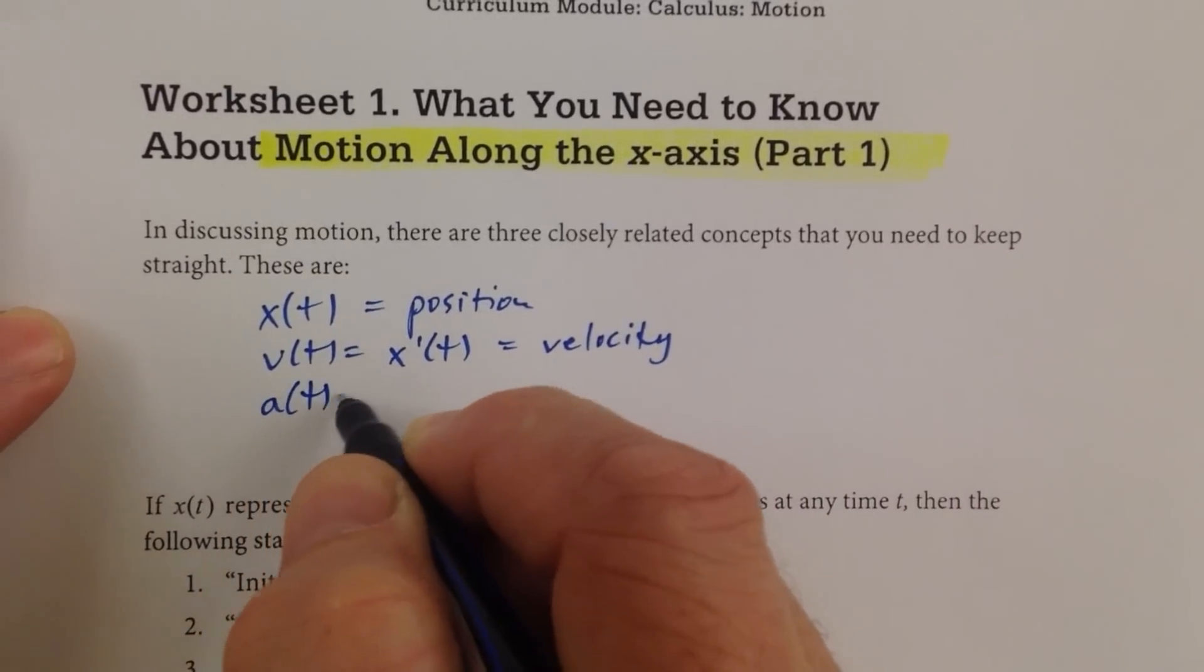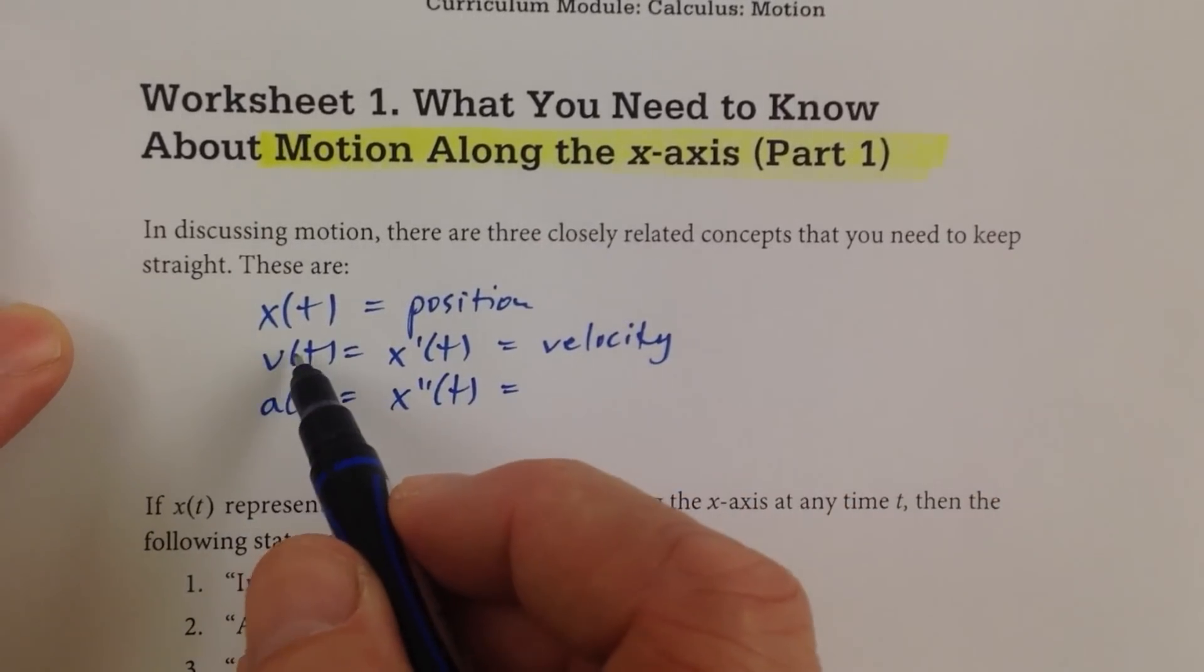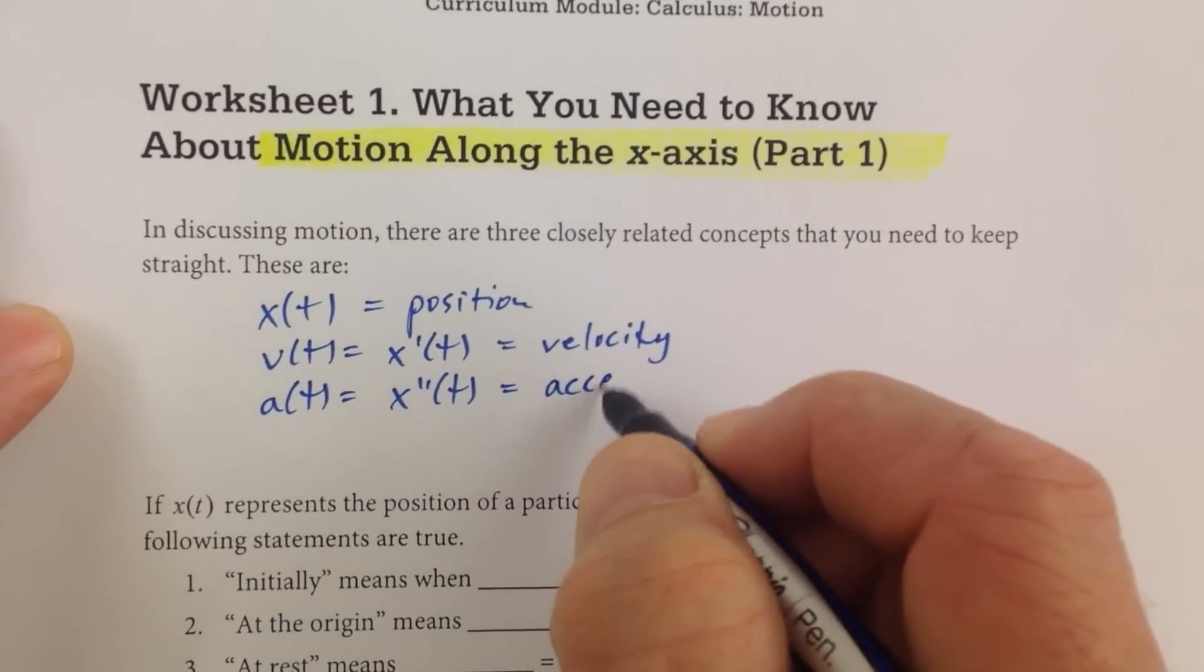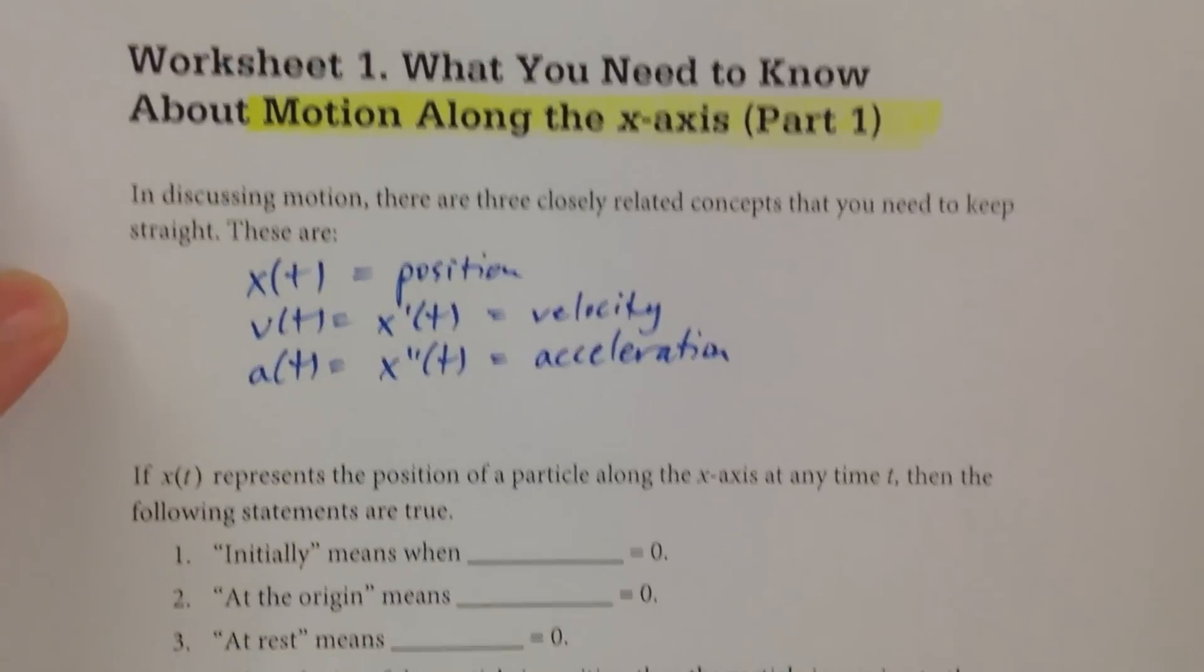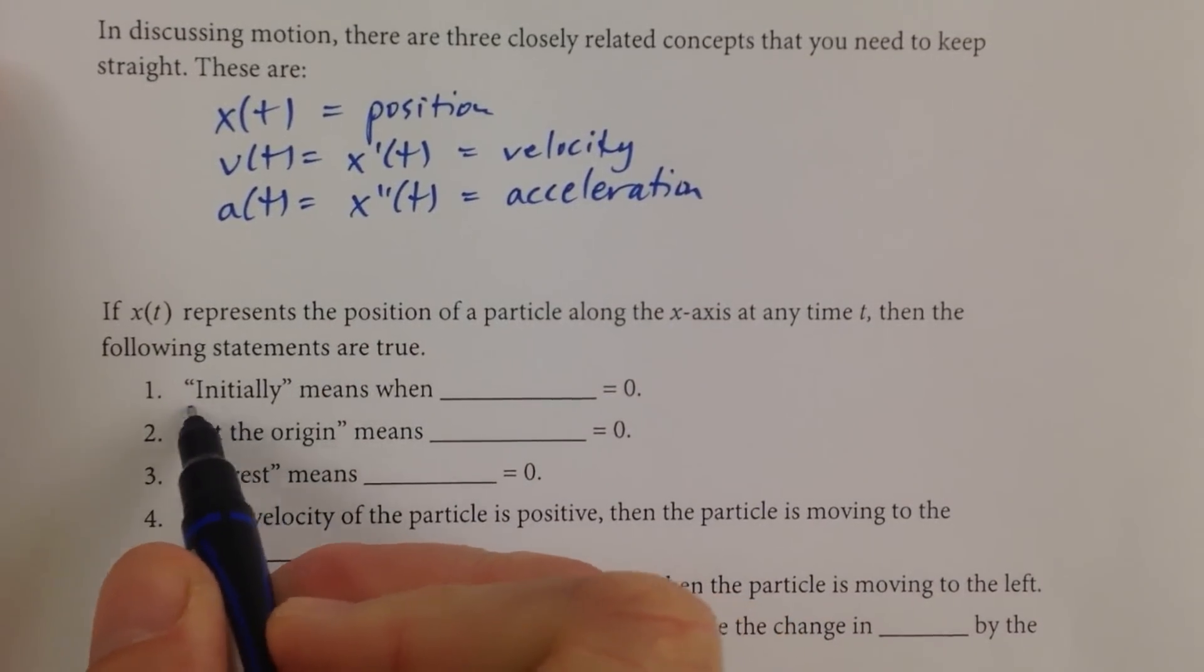And then the a(t), the acceleration at any one time, is how quickly is the velocity changing, or the first derivative of the velocity, or the second derivative of the position. So then we're going to call that the acceleration. I just want to have that there while we go through this sheet.